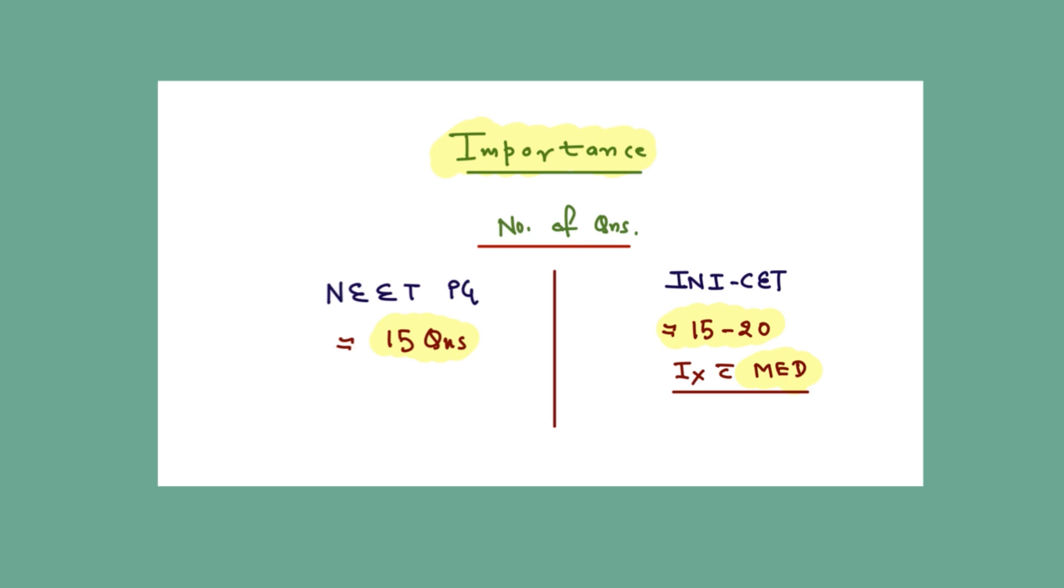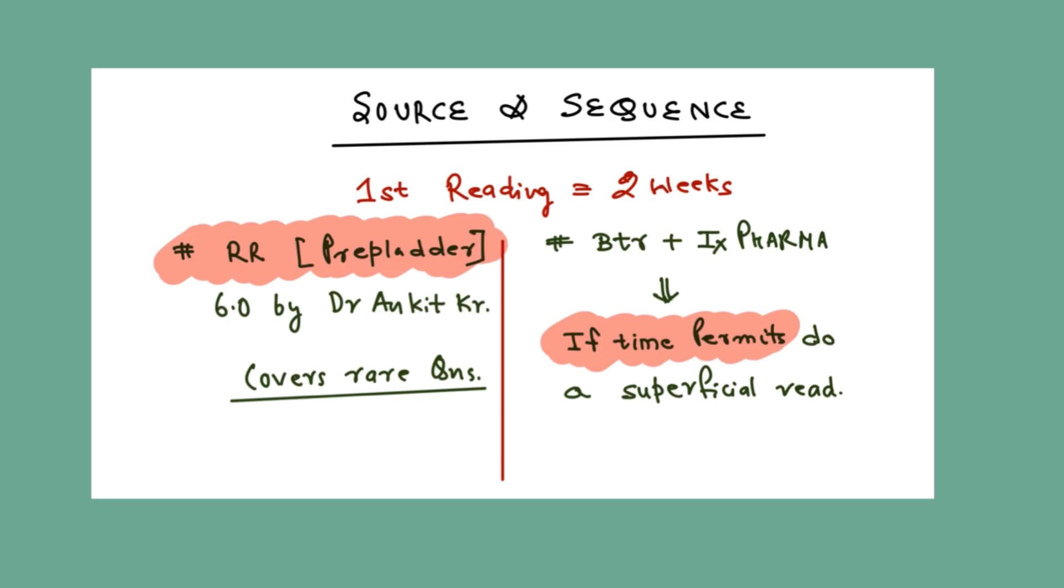In INI, around 15 to 20 questions will come. And in INI, more number of pharma and medicine integrated questions and with other subjects also like Obs kind of integrated questions will come. And you can target almost 90% of questions from the concise sources I will be telling you. These are not only concise sources but enough also. And maybe it can cover all 100% of questions.